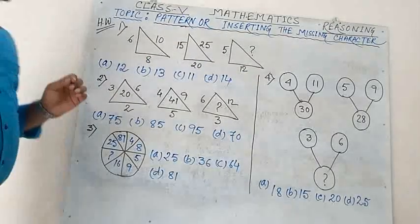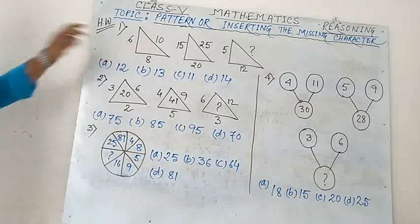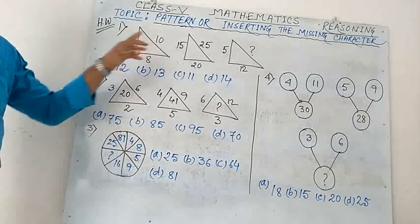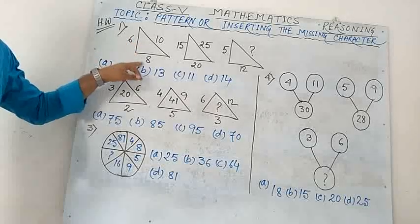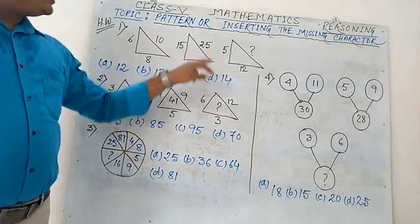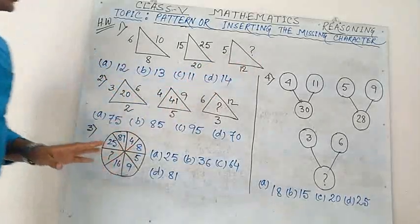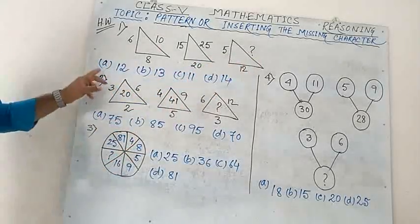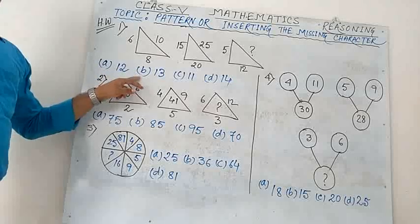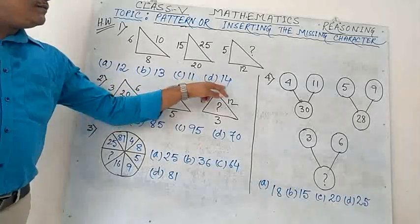Depending on today's discussion, this is your homework. Number 1: 3 triangles with sides 6, 8, 10; 15, 20, 25; 5, 12, question mark. Options: A) 12, B) 13, C) 11, D) 14.